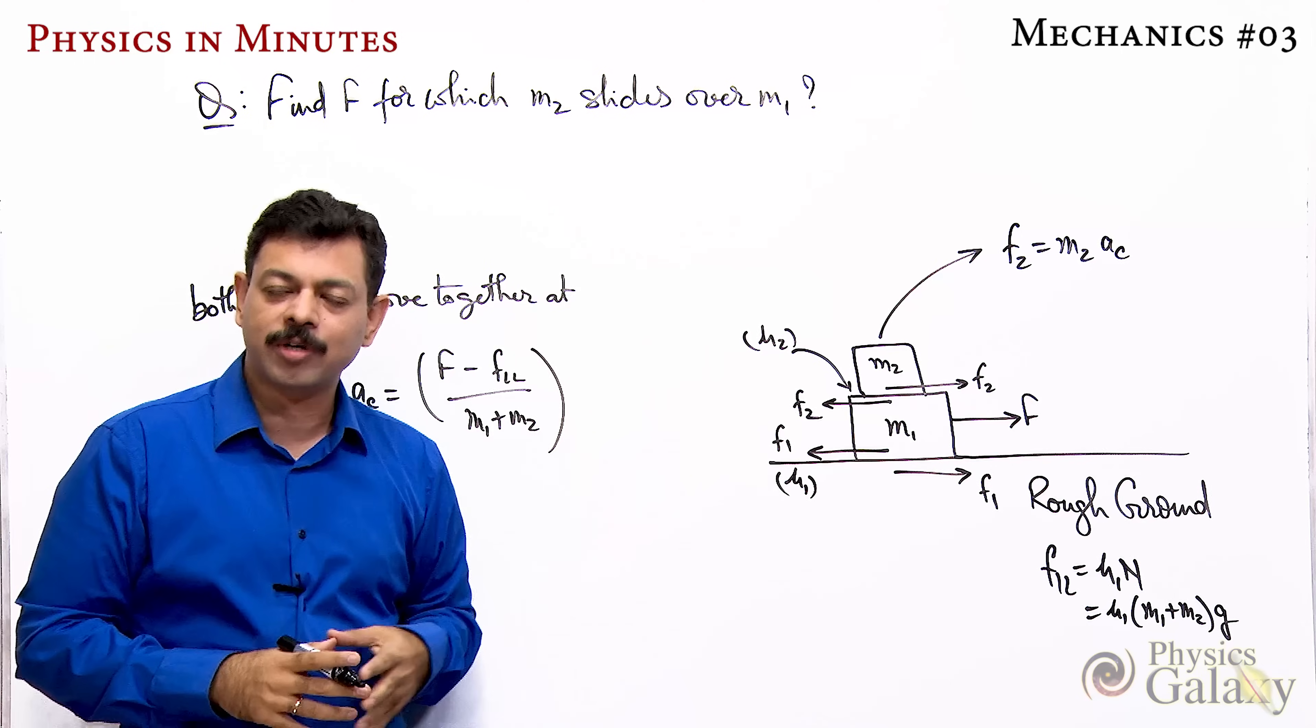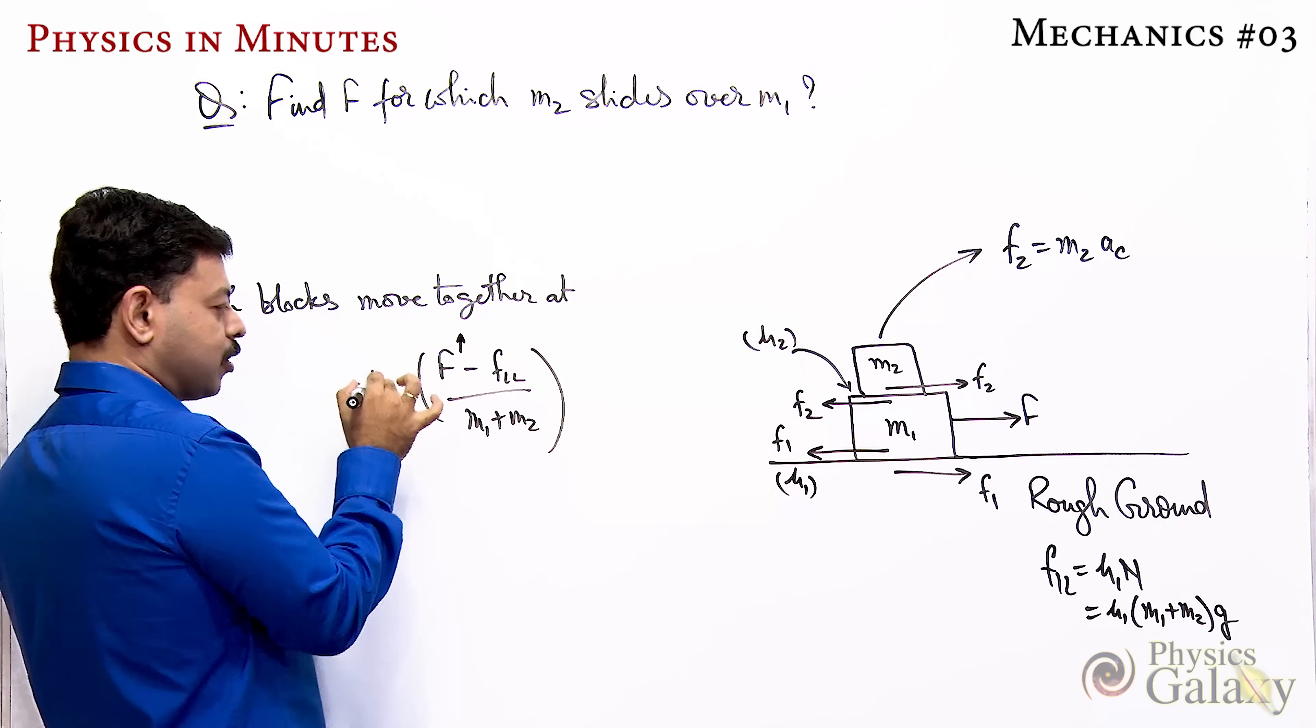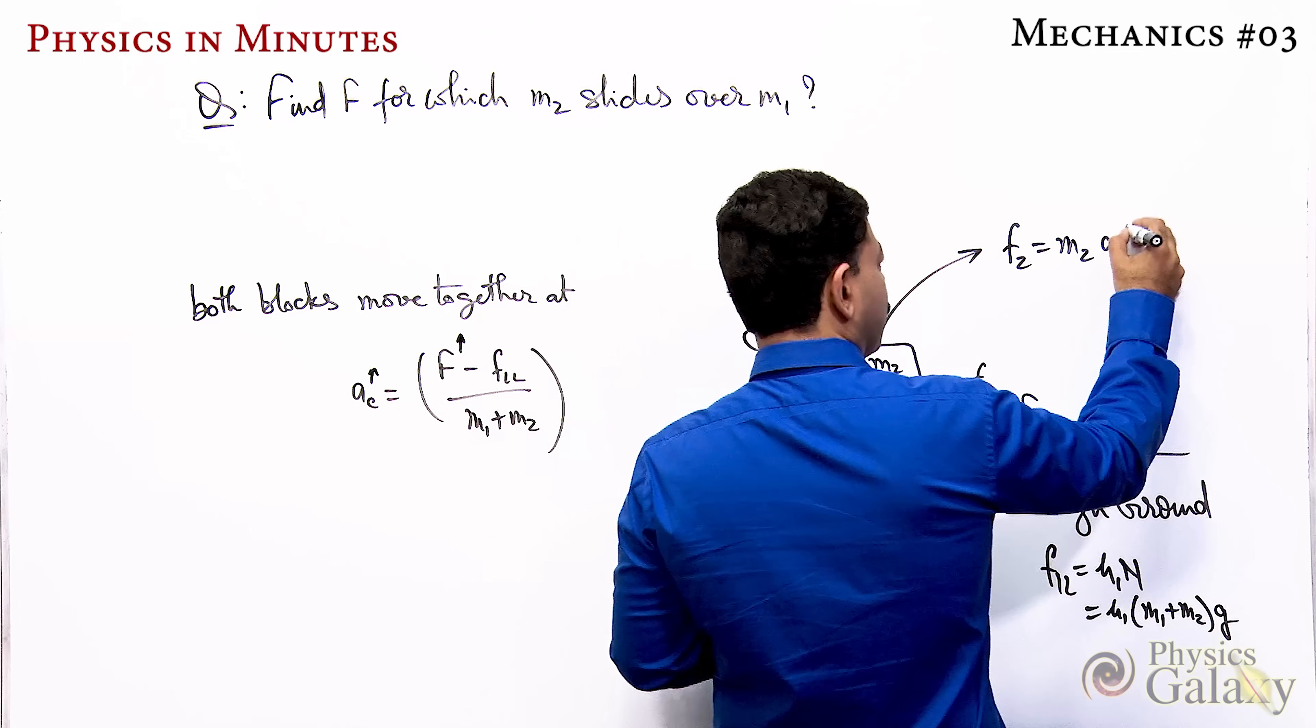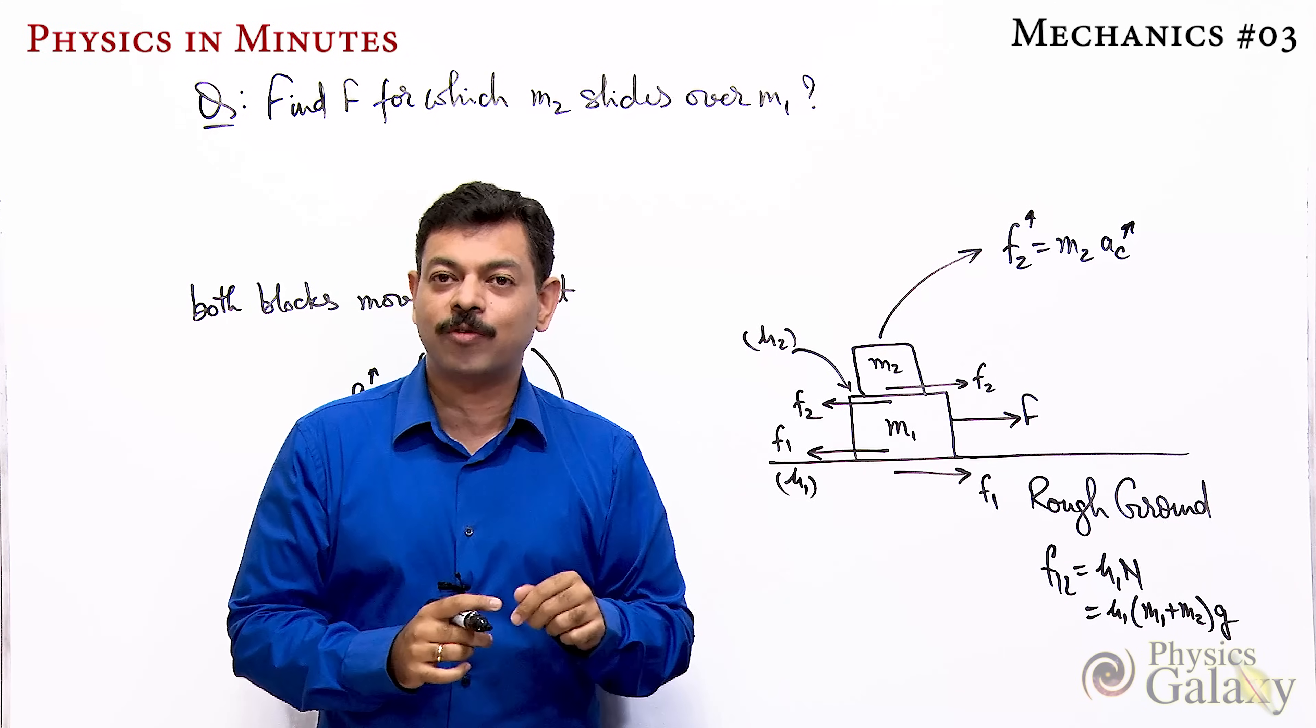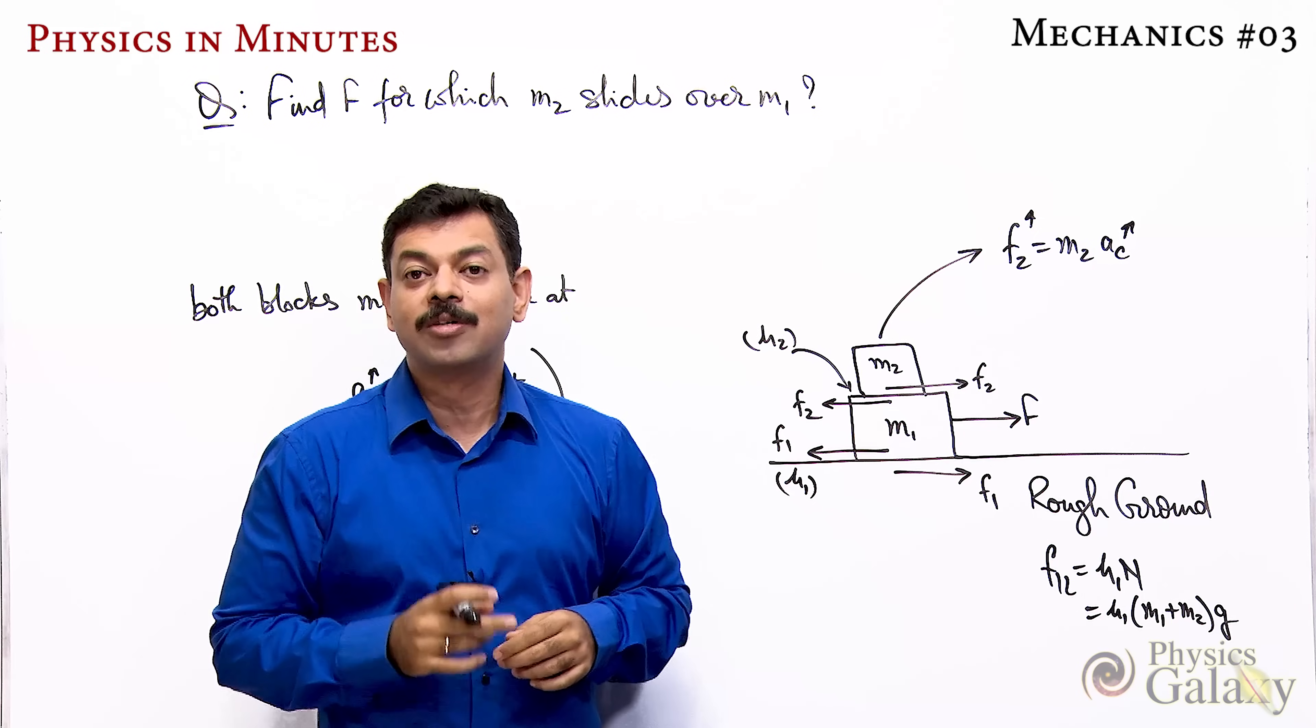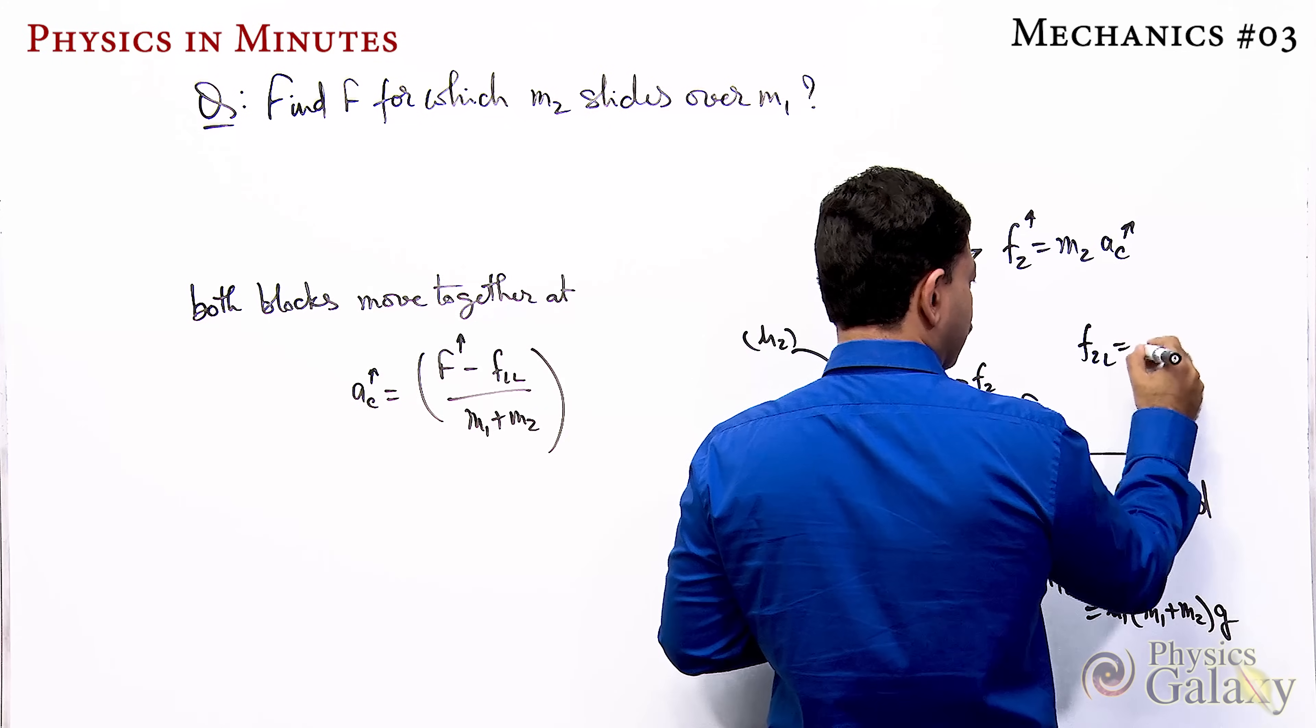You've written the equation for m2. Now see carefully: as I increase the external force, the common acceleration will increase. As common acceleration increases, the value of f2 increases. And we know very well that friction between any two surfaces, when it touches the limiting value, sliding starts between those surfaces. And here you know the limiting value of f2 will be μ2 m2 g, since the normal reaction here is its weight, which is m2 g.